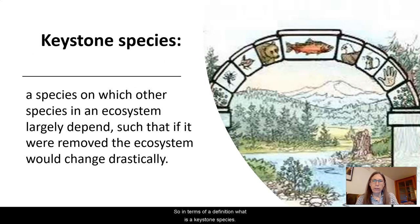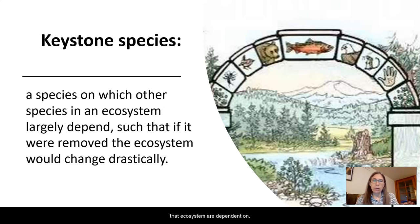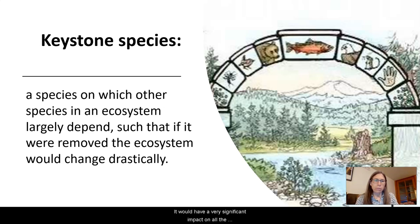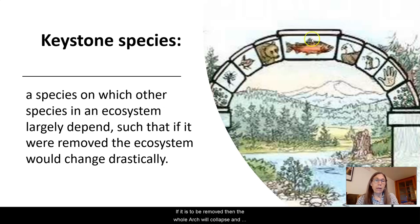So in terms of a definition, what is a keystone species? This is a species on which a lot of other species within that ecosystem are dependent. If that keystone species were to be removed, it would have a very significant impact on all the other species that are interdependent on it. In this image, the keystone is in an arch — if it is removed, the whole arch will collapse, and all the other species dependent on the keystone species will be affected.